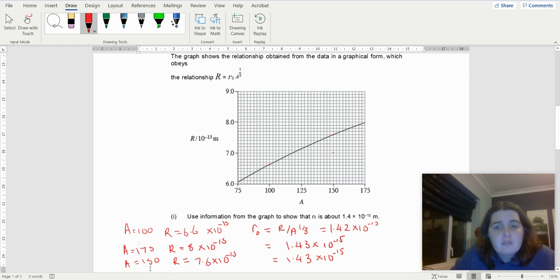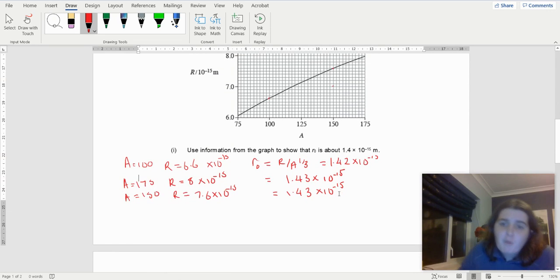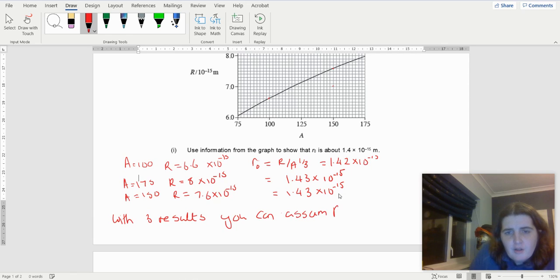So with these three results, I can say that's about 1.43. So to show that, 1.4 is about that. So I've used three results. So with three results, you can assume R₀ is about 1.4 × 10⁻¹⁵.